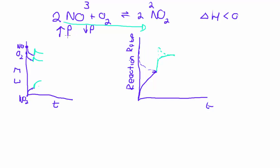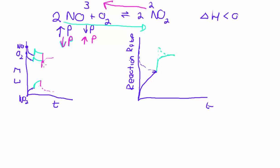What if we had a decrease in pressure as our disturbance? The system will favor the reaction that leads to an increase in pressure, which means the reverse reaction is going to be favored. The moment we have a decrease in pressure, all the gases experience a decrease, so all three concentrations fall immediately. Since the reverse reaction is favored, there must be a gradual decrease in our product and a gradual increase in our reactants.